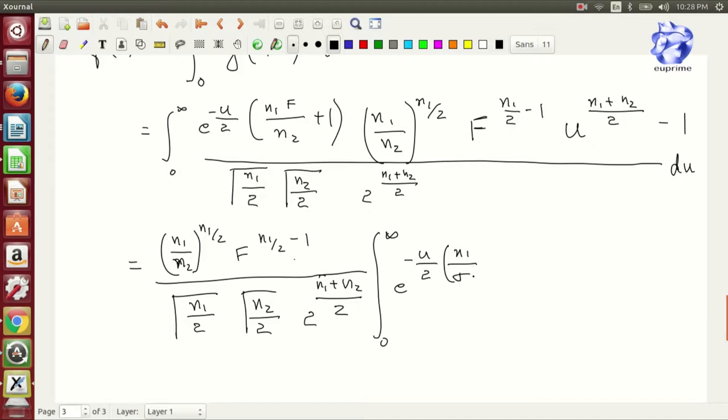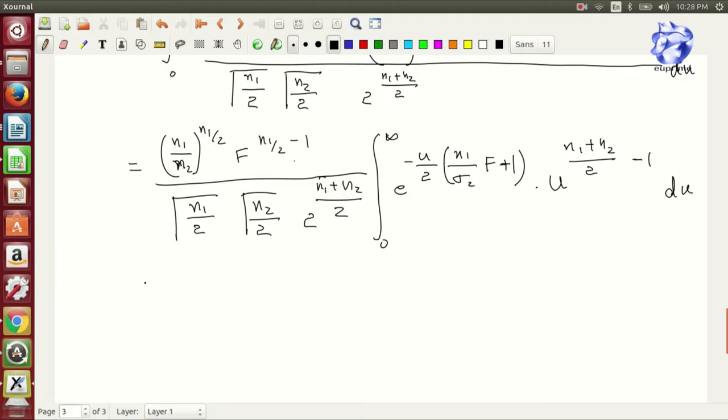It is solving - don't be intimidated. Finally we get the following solution: n1 by n2 to the power n1 by 2, F to the power n1 by 2 minus 1, divided by Γ(n1 by 2) Γ(n2 by 2).